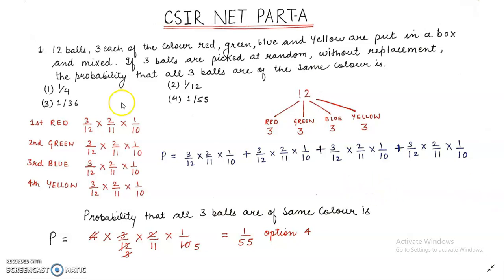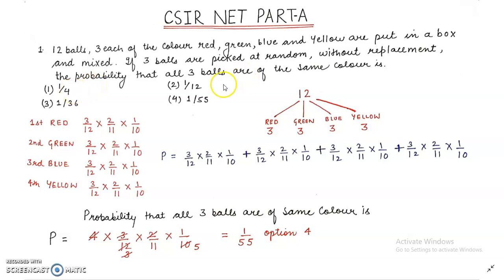Question number 1 is from probability. The question says: 12 balls, 3 each of the colors red, green, blue and yellow are put in a box and mixed. If 3 balls are picked at random without replacement, the probability that all 3 balls are of the same color is — we are given four options: 1/4, 1/12, 1/36, and 1/55.